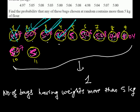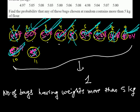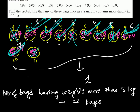Then 5 kg — this is equal to 5 but not more than 5, so we don't count it. Then 5.06 — more than 5, count it. Then 5.08 — more than 5, count it. Then 4.98 — not more than 5. Then 5.04 — more than 5. Then 5.07 — more than 5. And 5 kg — equal to 5, so we don't count it. Altogether we get seven bags having weight more than 5 kg.